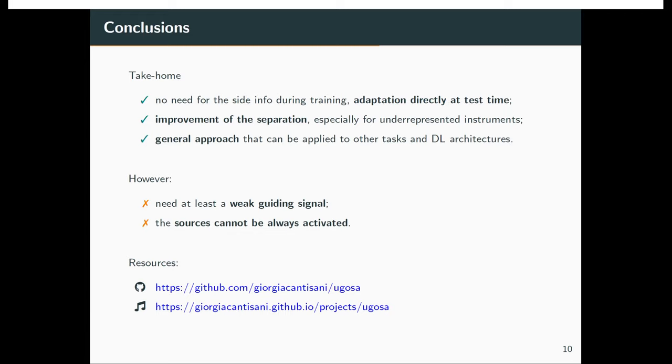The results show that we need at least a weak guiding signal in a semi-supervised setting for improving the separation quality, and that a naturally unsupervised adaptation is not enough. The main drawback is that there is no improvement over the non-adapted model if the sources are continuously activated.